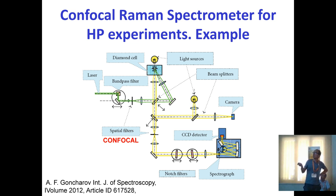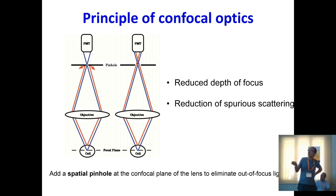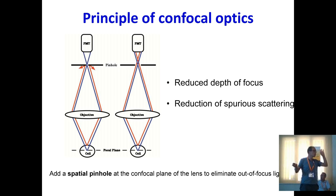This is a typical confocal spectroscopy system usable for Raman or infrared. The spatial filter (pinhole/slit) is key: when the slit is open, light from all points enters the detector. When the pinhole size is reduced, light from off-focus points is rejected, reducing depth of field and allowing depth-resolved measurements inside the cell. This also reduces spurious scattering from surrounding material.